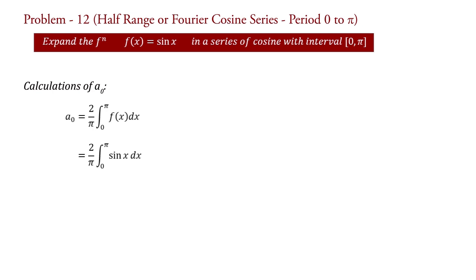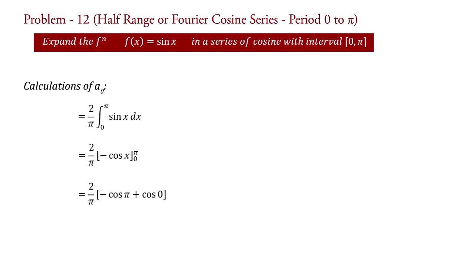The integral of sin(x) equals minus cos(x). Therefore a₀ = (2/π) × [−cos(x)] from 0 to π. Putting in the limits: a₀ = (2/π) × (−cos(π) − (−cos(0))). Since cos(π) = −1 and cos(0) = 1, we get a₀ = (2/π) × (−(−1) + 1) = 4/π. This is the value of a₀.